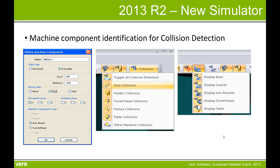There are also some new machine components that can be defined, including axis mount and turret head. There is additional tool collision detection for tools, holders, turret heads, fixtures, tables and other machine collisions. You can also toggle on and off graphically the machine base, guards, axis mounts, turret heads and tables.